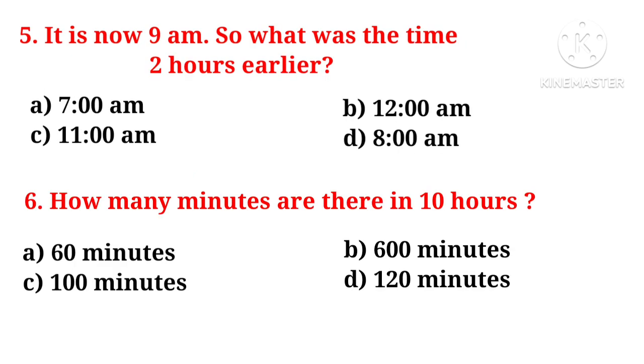5th question, it is now 9 a.m. So what was the time 2 hours earlier? Earlier means pehle. Abhi 9 o'clock ho raha hai, toh 2 hours pehle kaun sa time tha? 7 o'clock, simple.